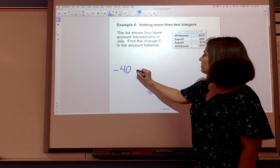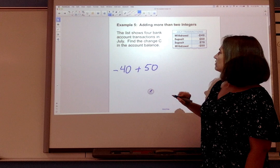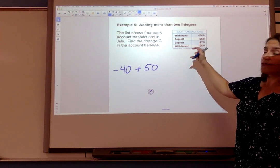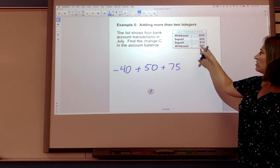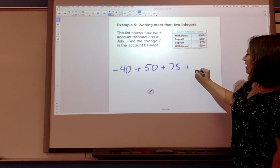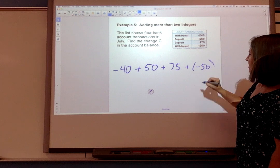Then we added 50. Then we've added another $75. Then we've withdrawn 50. So we're going to add -50.